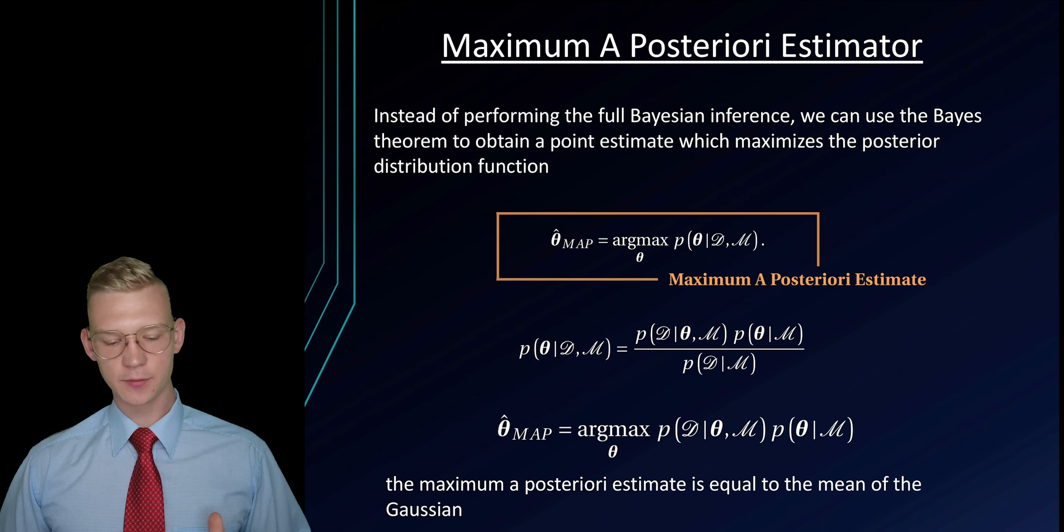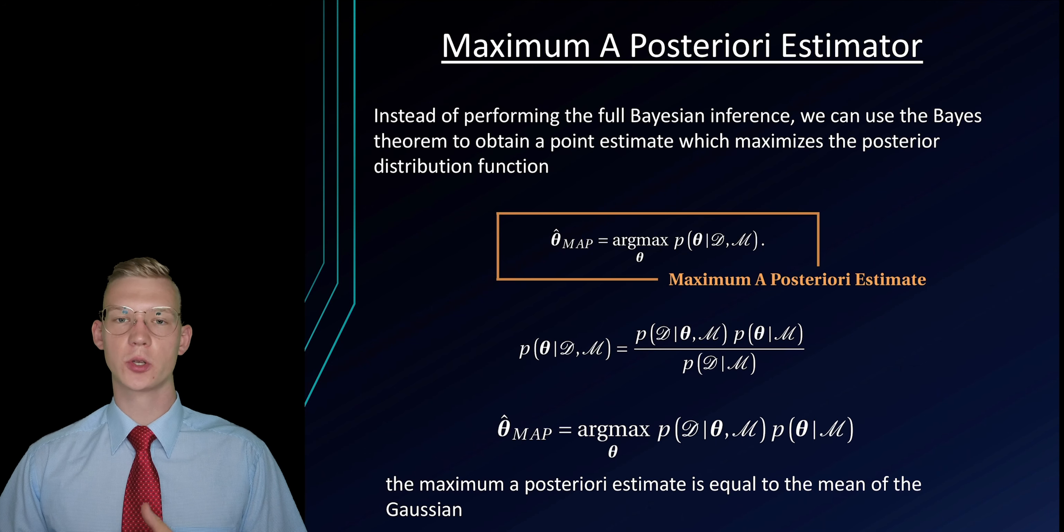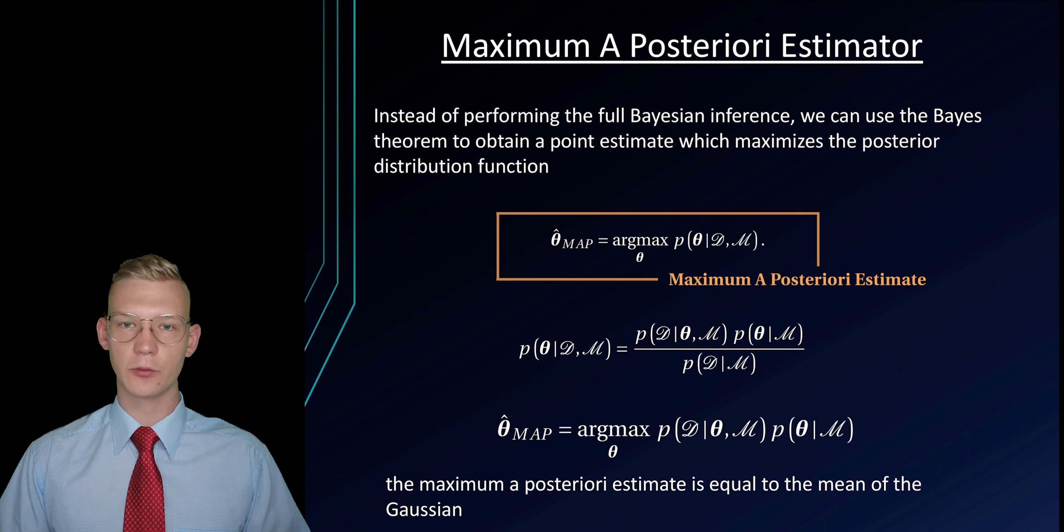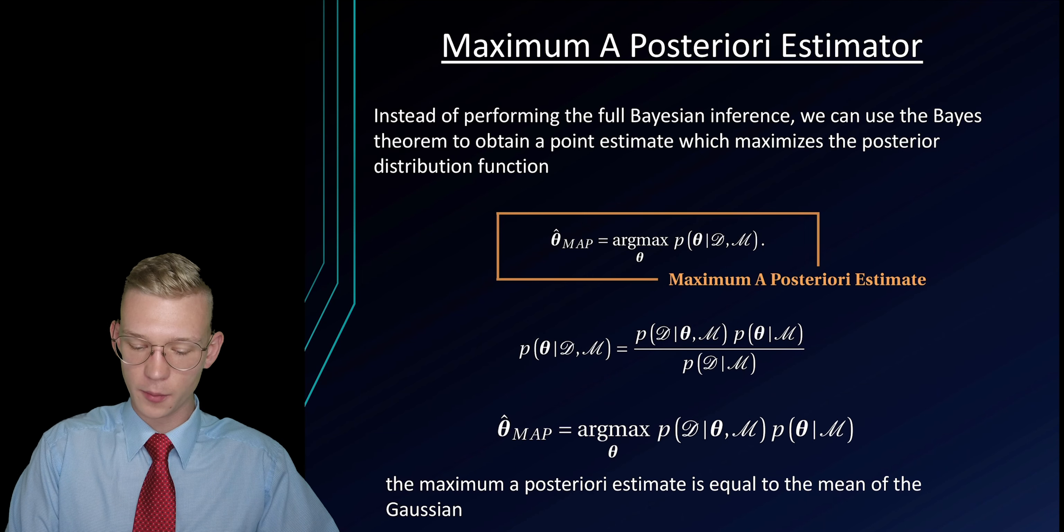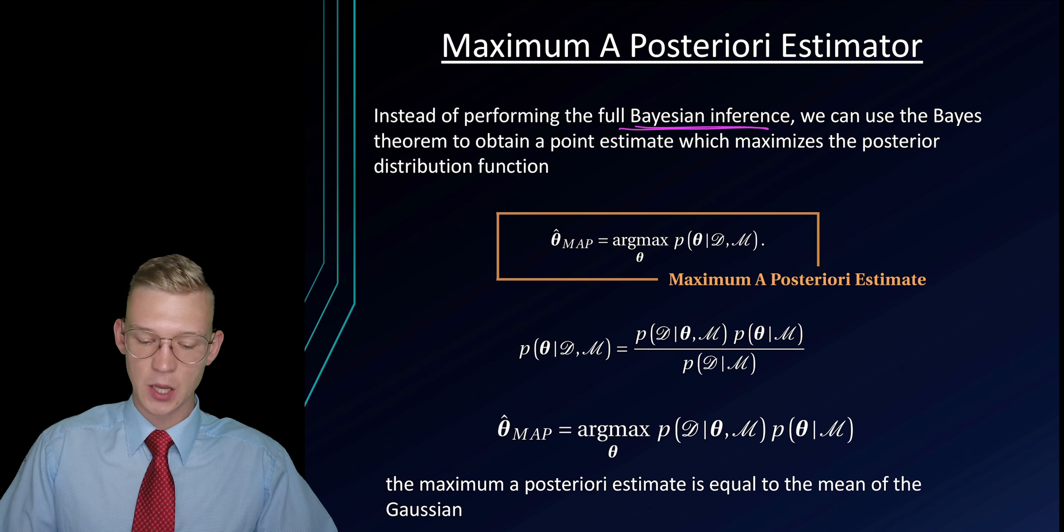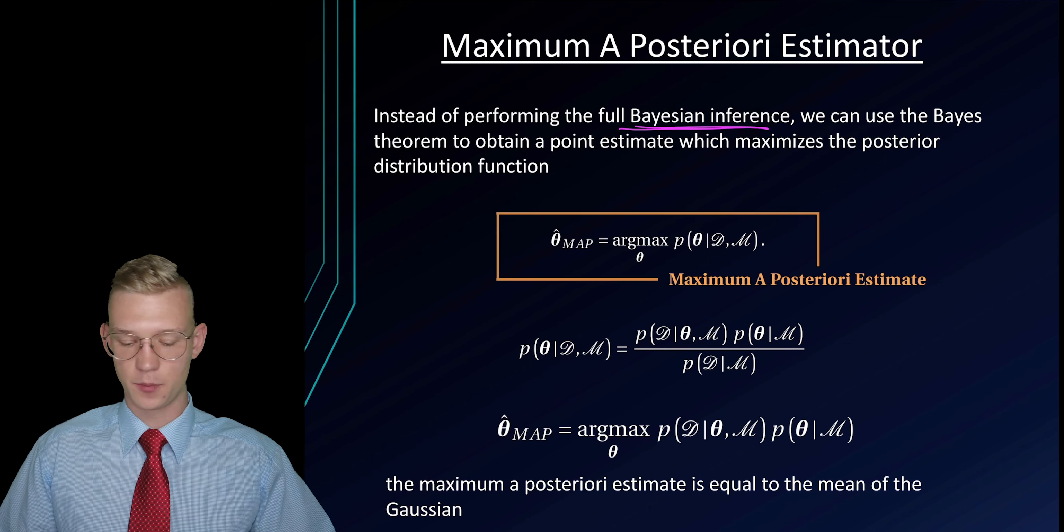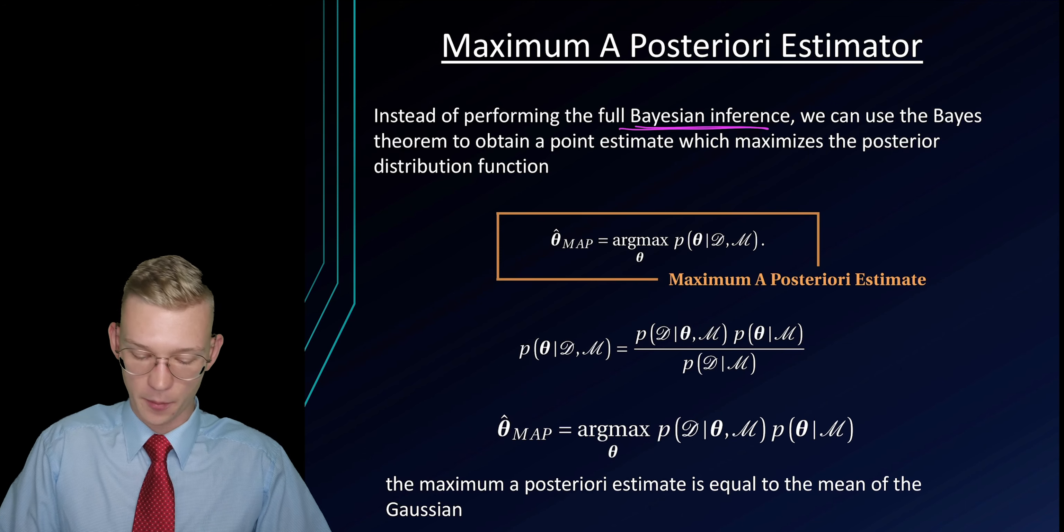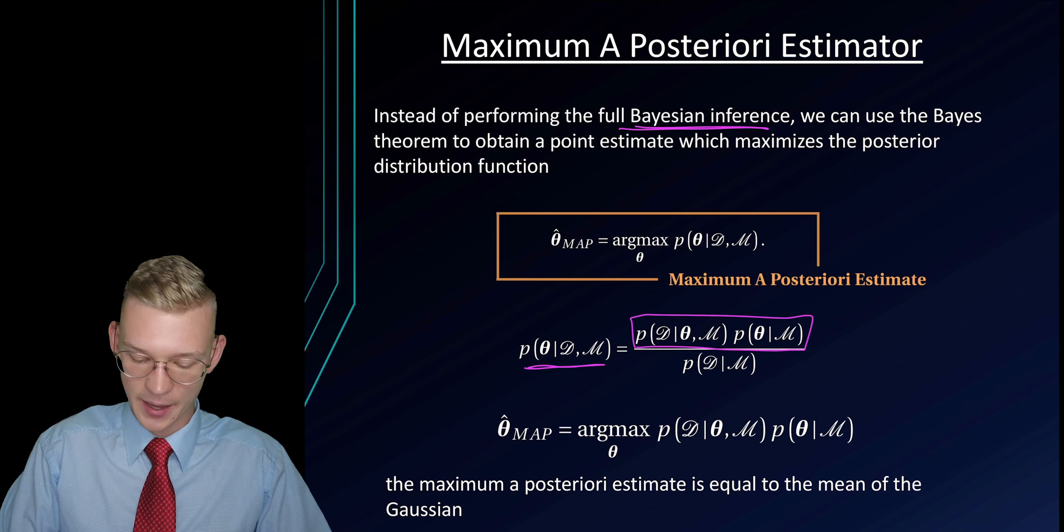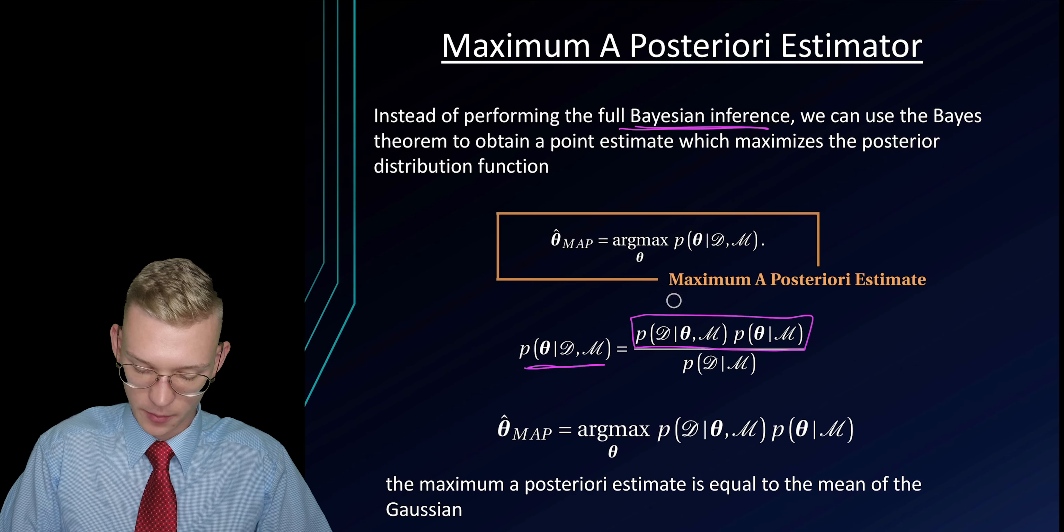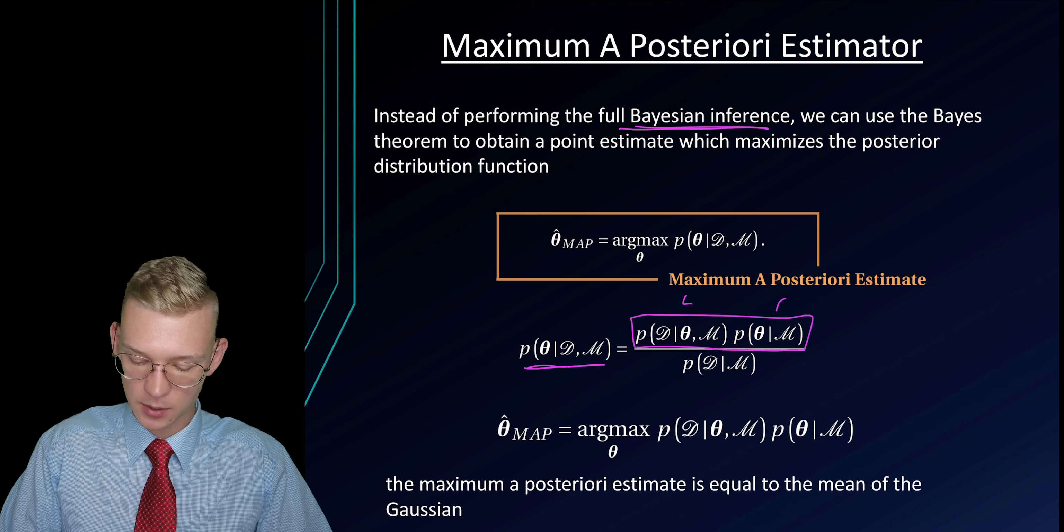In the last videos we talked about the Gaussian approach with the Bayesian inference of parameters. Now we can do instead of just the full Bayesian inference, we can just use the term from our posterior distribution which maximizes our likelihood times prior.